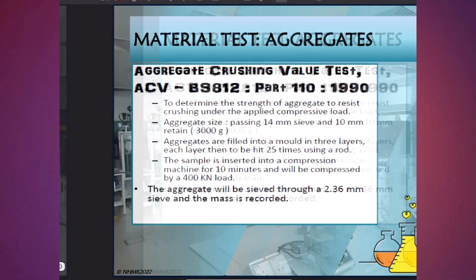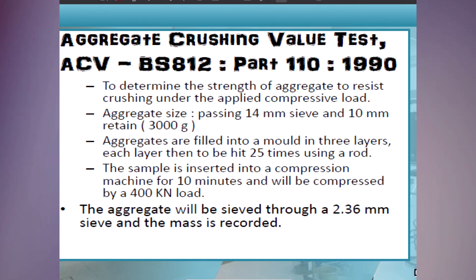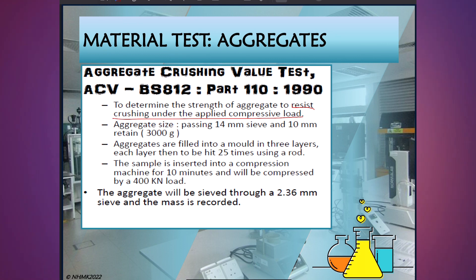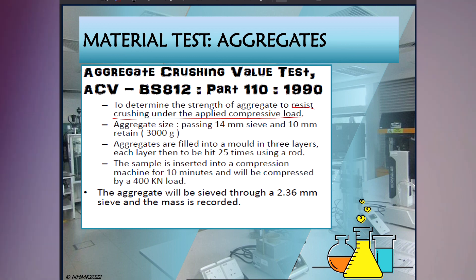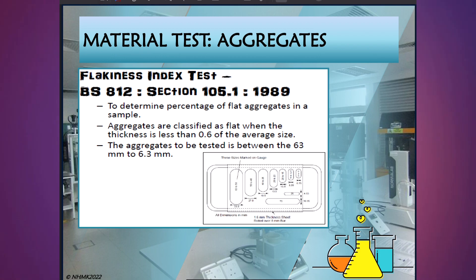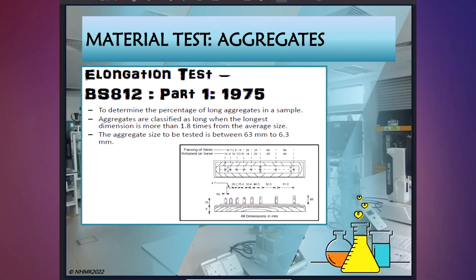Next, the aggregate crushing value test is to determine the strength of aggregate to resist crushing under an applied compressive load. This is similar to the impact test, but resistance to crushing rather than resistance to impact. Next, the flakiness index test is to determine the percentage of flat aggregates in a sample. And the elongation test is to determine the percentage of long aggregates in a sample.